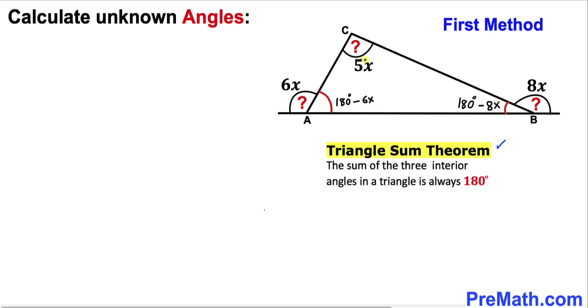According to this theorem, the sum of all these three interior angles of this triangle must be 180 degrees. Let's go ahead and add all these three interior angles.